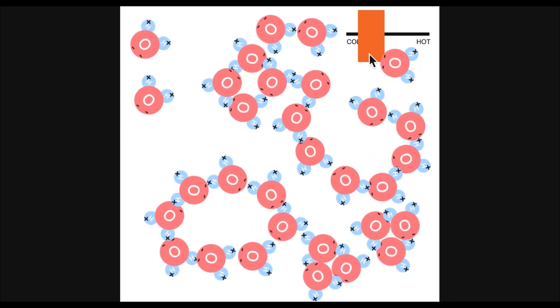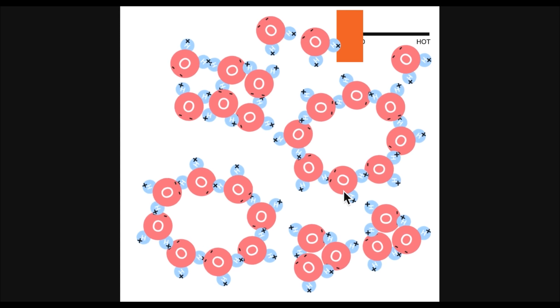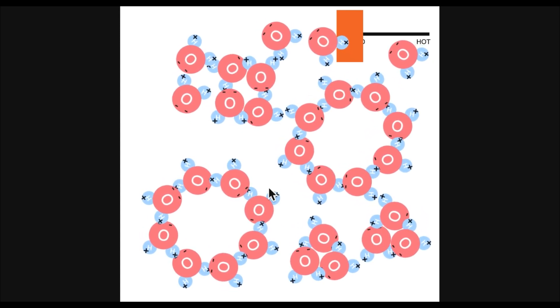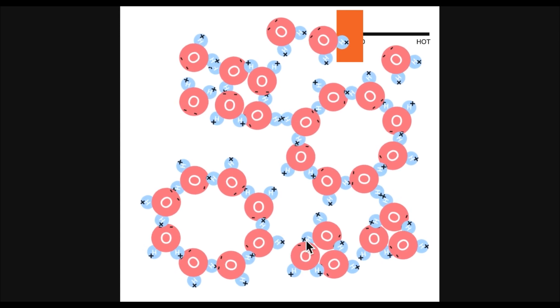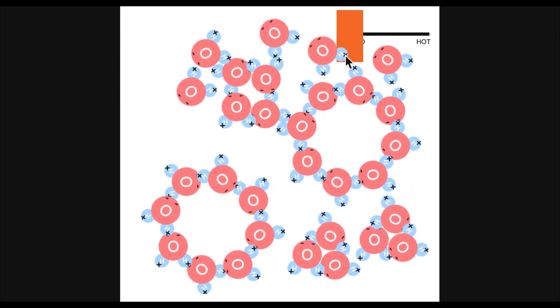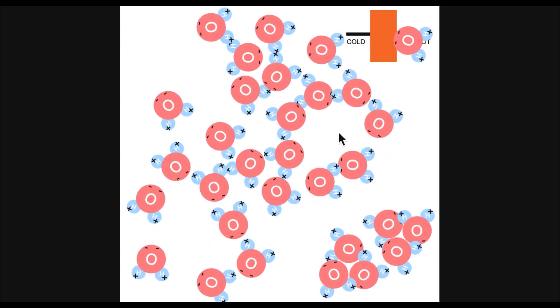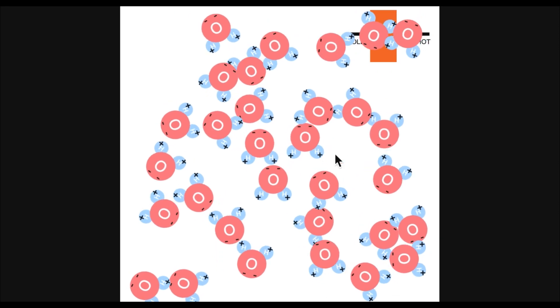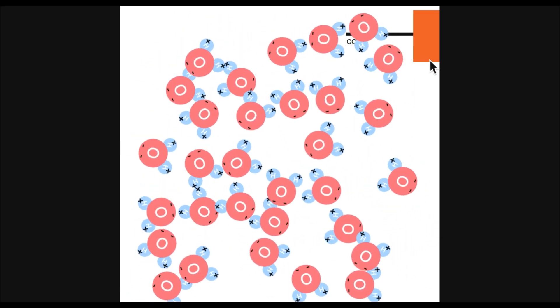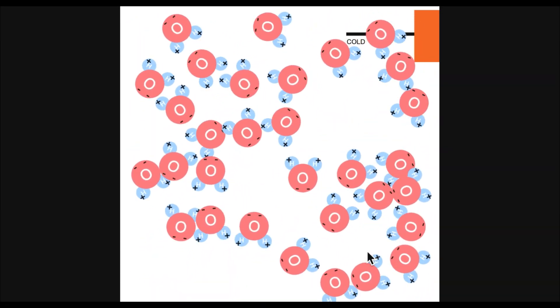Remember, atoms have three states: solid, liquid, and gas. If you see here, there's little movement with our water molecules, so we're at the cold level, which means it's a solid. If I move it to room temperature, it's a liquid and they begin to move faster. If we move it to hot, now we have gas and they're moving faster.